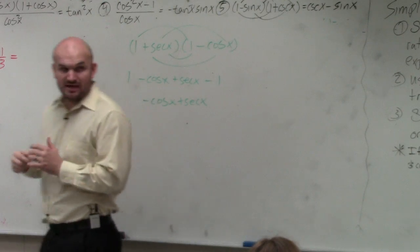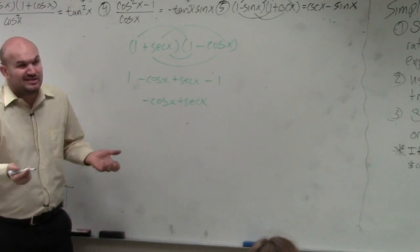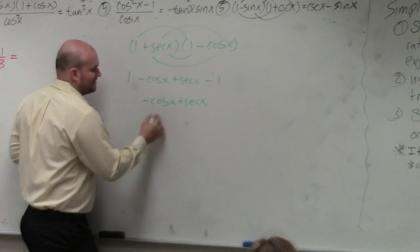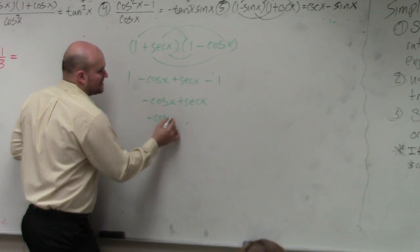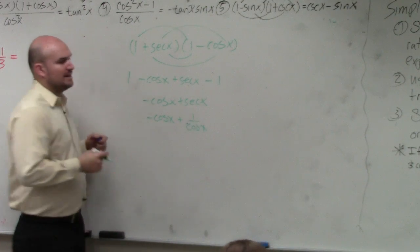Can I combine negative cosine of x plus secant of x? Could I? Well, they're not like terms. However, I could rewrite this as negative cosine of x plus 1 over cosine of x. Would that make sense? Yes.